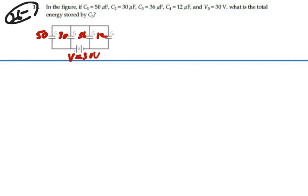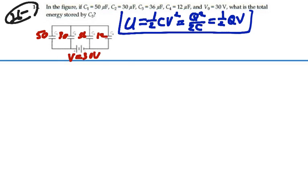If we were looking for energy stored, then we want to find either the charge on that C3 or the voltage across it, because then we can use one of the energy formulas. We have energy stored as 1 half CV squared, or Q squared divided by 2 times C, or 1 half QV.